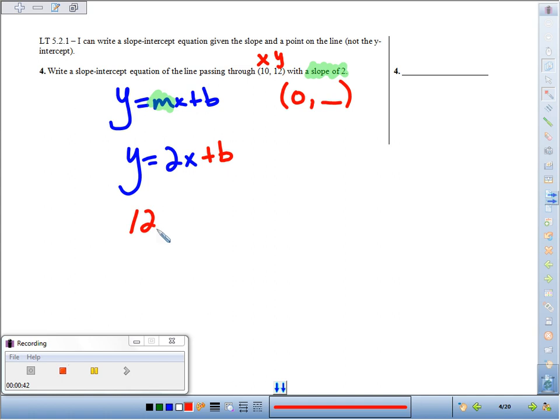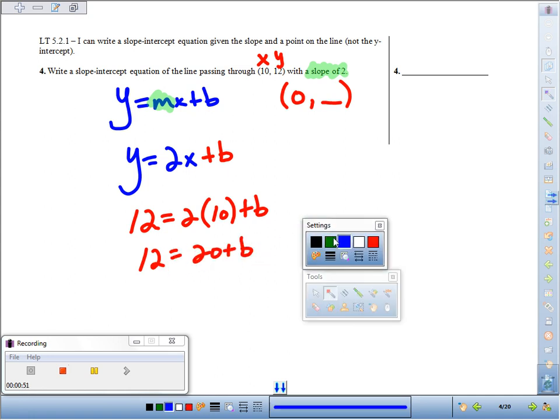Well, put 12 in for y, put 10 in for x, and what do you get? You get 12 equals 20 plus what? So really, it's a one-step equation.